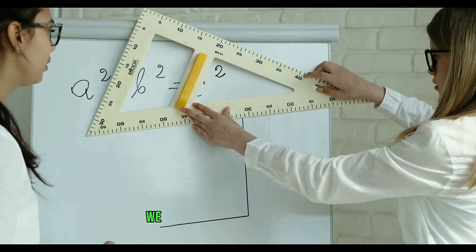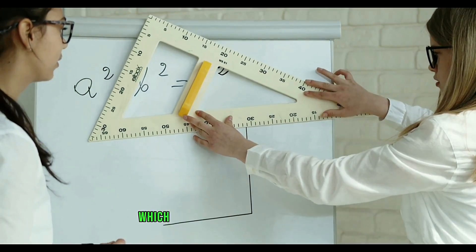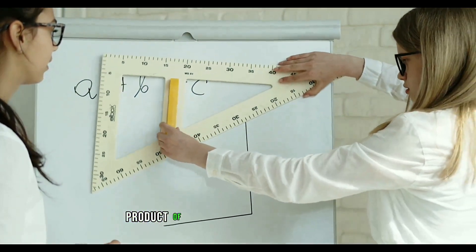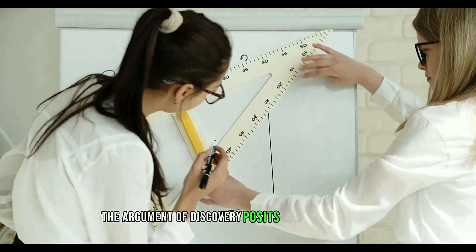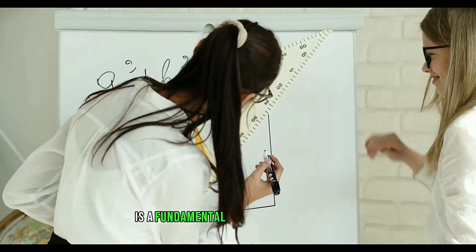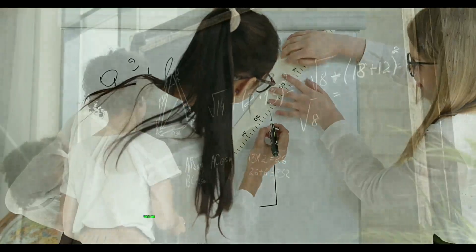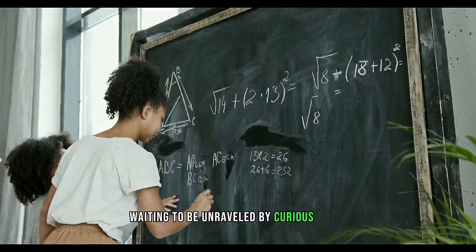On one hand, we have the argument of invention, which suggests that mathematics is a product of human intellect and creativity. On the flip side, the argument of discovery posits that mathematics is a fundamental truth of the universe, waiting to be unraveled by curious minds.